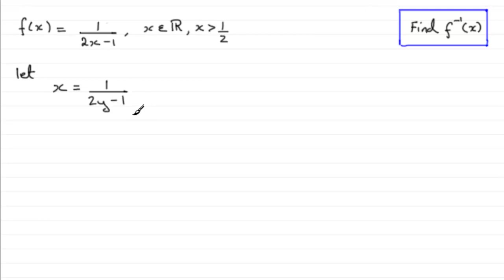So I'd want to multiply both sides by 2y minus 1, so therefore we'd have x multiplied by 2y minus 1 equals 1. Then if I expand the brackets you've got 2xy minus x equals 1. And then I'd want to add x to both sides, so you get 2xy equals 1 plus x.